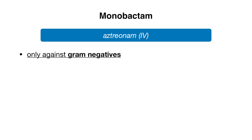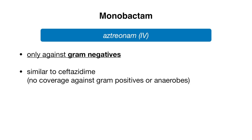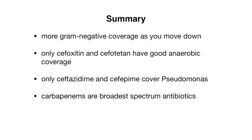For our final beta-lactam antibiotic class, we have monobactam, which includes aztreonam available in IV form. Aztreonam only has coverage against gram-negatives — no coverage against gram-positives or anaerobes — making it very similar to ceftazidime. To summarize: with cephalosporins, you have more gram-negative coverage as you move down the generations. Only cefoxitin and cefotitan have good anaerobic coverage, only ceftazidime and cefepime cover pseudomonas, and carbapenems are your broadest-spectrum antibiotics.